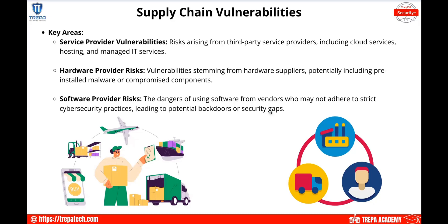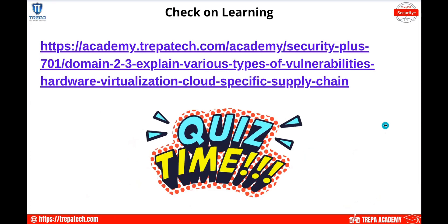Supply chain vulnerabilities — service provider vulnerabilities include risks arising from third-party service providers like cloud services, hosting, and managed IT services. Think about the hardware providers and software providers you use — make sure you're going through reputable sources. If you go with a startup for a critical application, make sure you have a plan in case that startup potentially goes out of business.